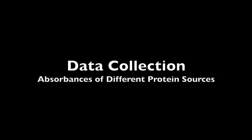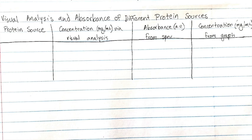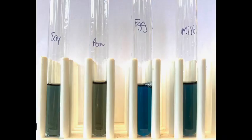Next, you'll complete the second data table in your notebook by finding the absorbances of our different protein sources. Below your first data table, draw this second data table as well — go ahead and pause the video to draw this. Here are our four protein sources — soy, pea, egg white, and milk — in Bradford reagent. You will be completing the first three columns of the data table from this video as I show the results.